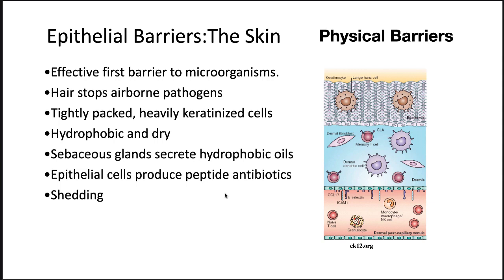The first system of innate immunity is the epithelial barrier — the skin. Skin is a very effective barrier to microbes. Hair on your skin prevents pathogens from accessing it. Skin itself is composed of tightly packed, heavily keratinized cells that are difficult to penetrate. It is hydrophobic and dry, which microbes cannot deal with easily. Sebaceous glands secrete hydrophobic oils, and epithelial cells produce peptide antibiotics. Even if a microbe survives all of this, the skin constantly sheds, causing any attached microbes to be lost.